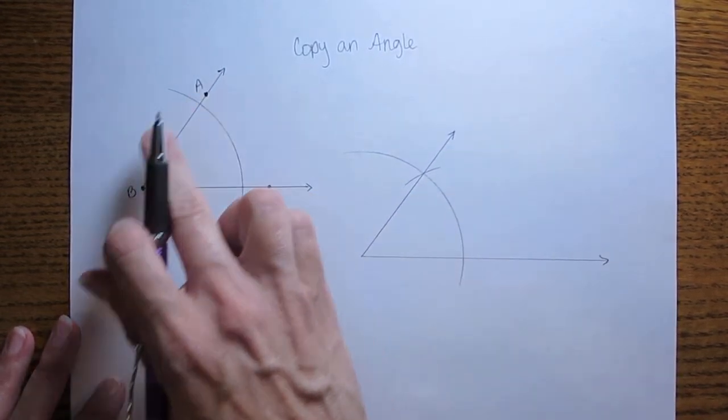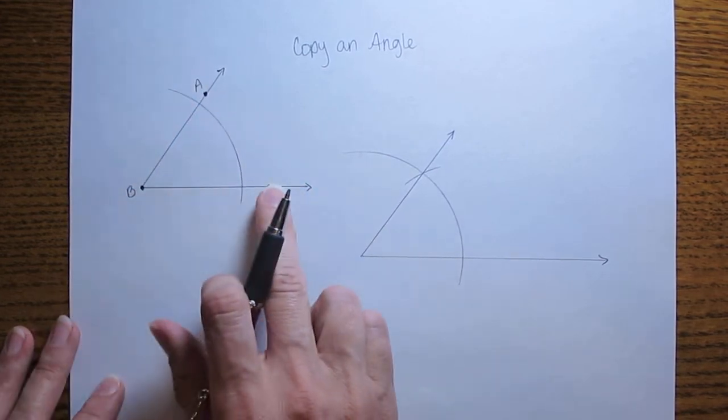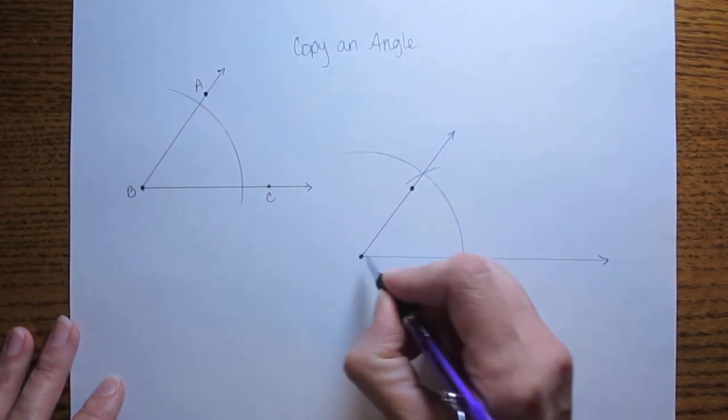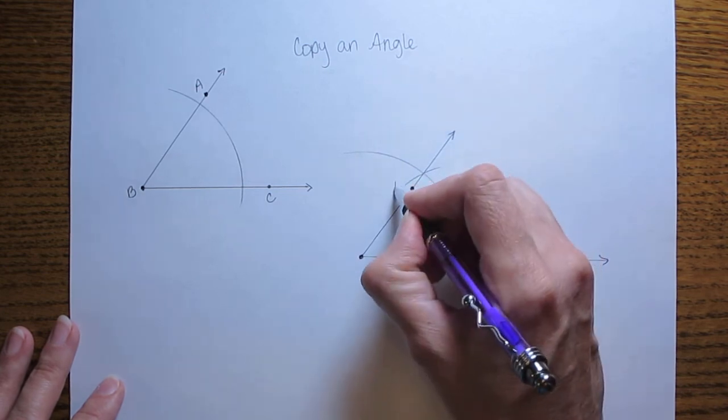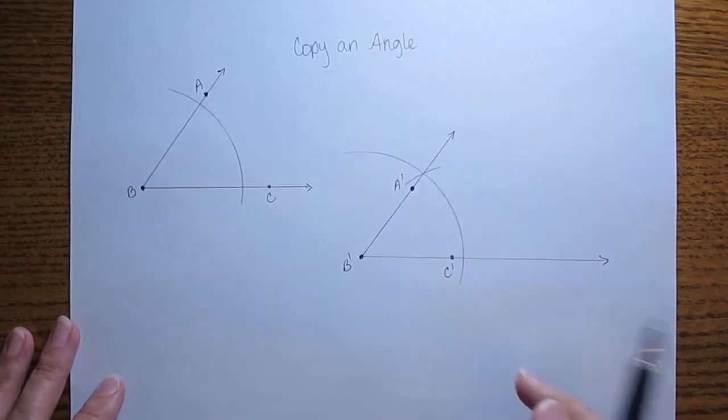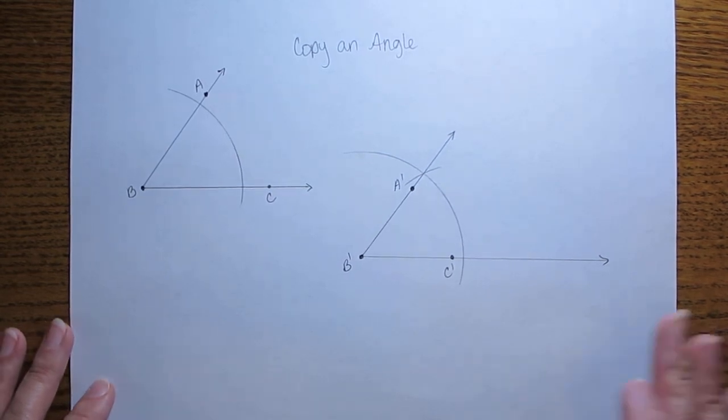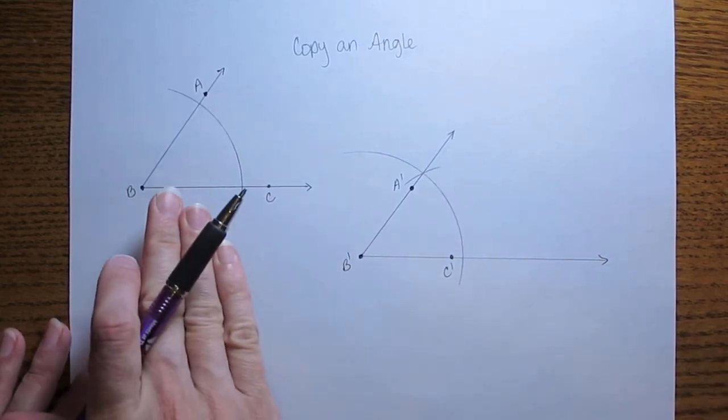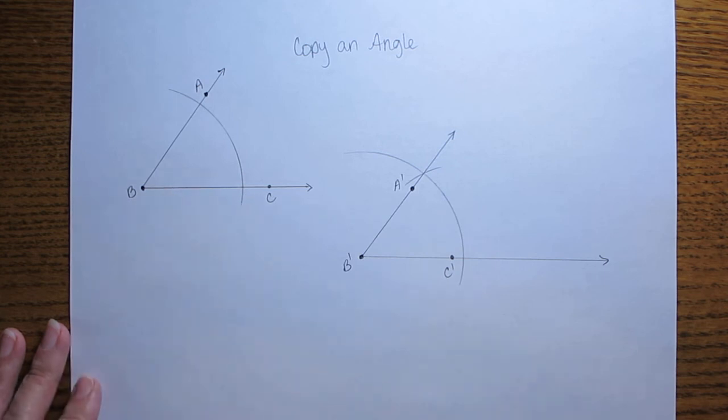We can mark this since the original was marked with points A, B, and C. We can mark our copy with points A prime, B prime, and C prime. And again the prime marks help us to remember this is the copied angle without the prime marks. That is the original angle.